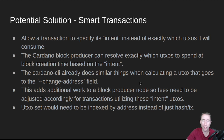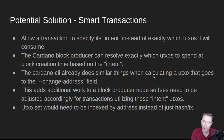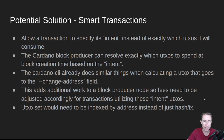The Cardano CLI already does similar things when calculating a UTXO that goes to the change address field. When you run 'cardano-cli transaction build' and specify a change address, it automatically calculates how much change goes to that UTXO, how much goes to the fee, and any change values that need to go in. So it already does some things like what I'm asking. This does add additional work to a block producer node, so anyone implementing this will need to figure out appropriate fees for transactions that utilize this intent-type UTXO input.